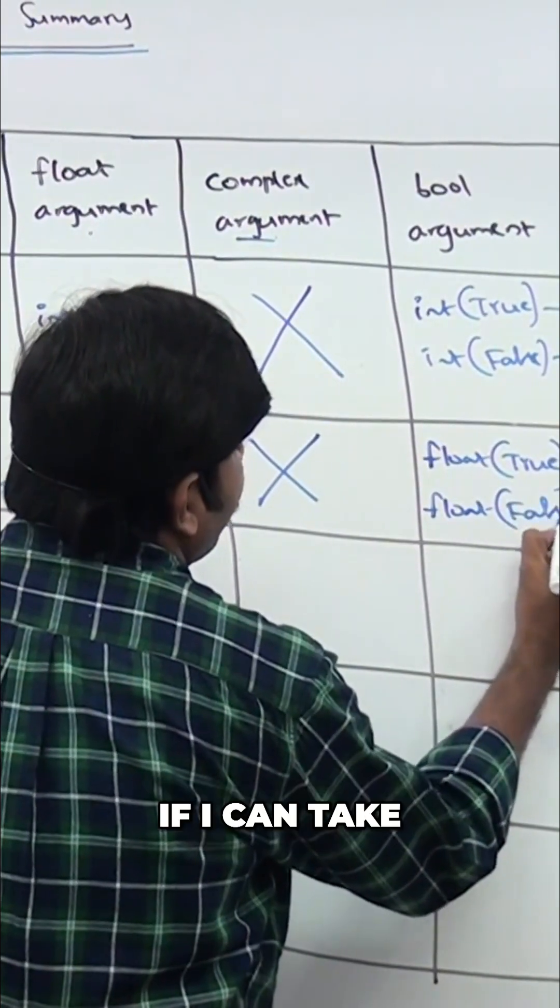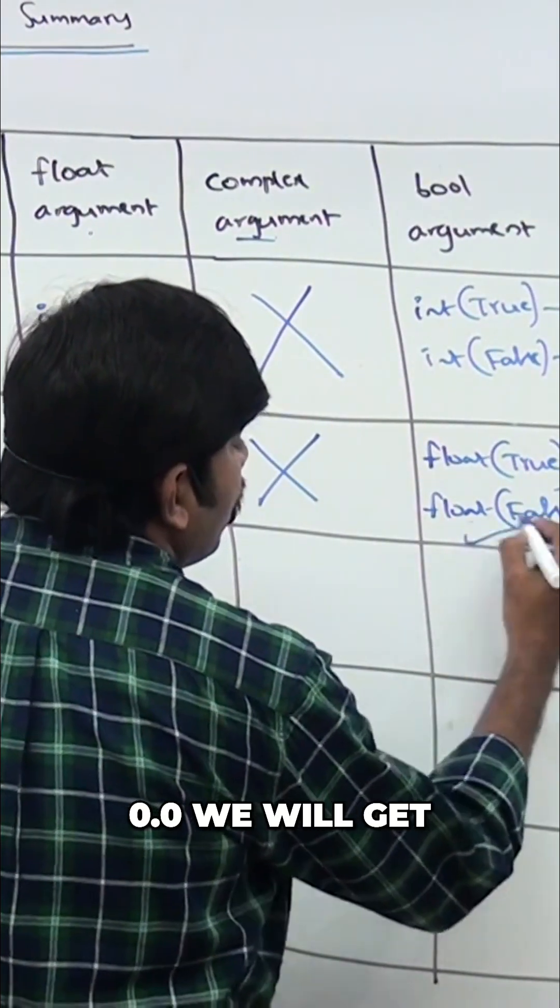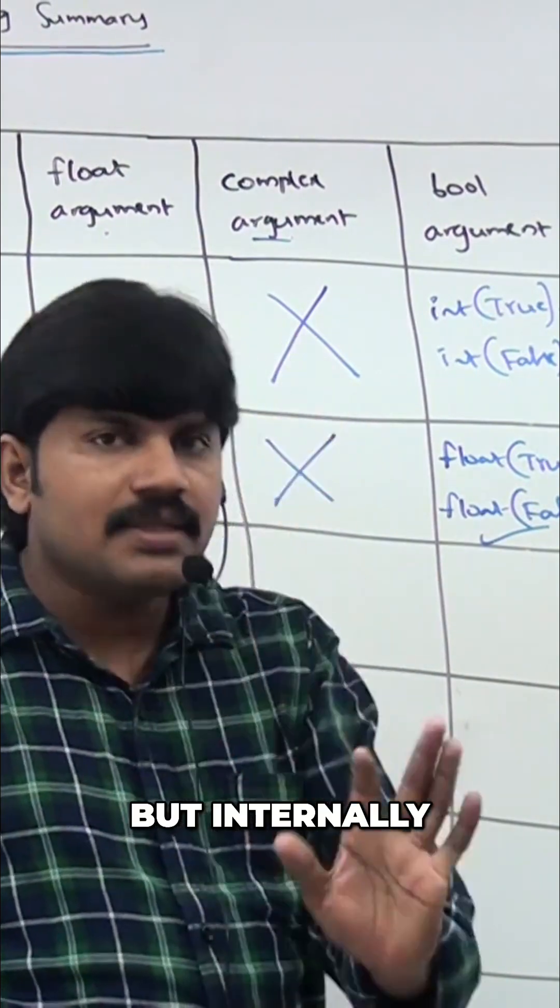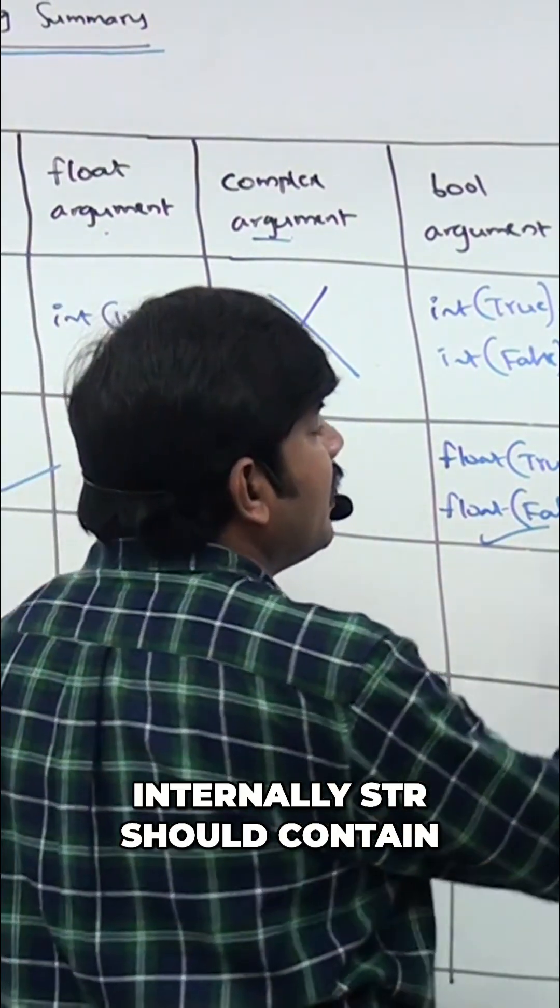Similarly, float(false) gives 0.0. String to float conversion is always possible, but internally the string should...